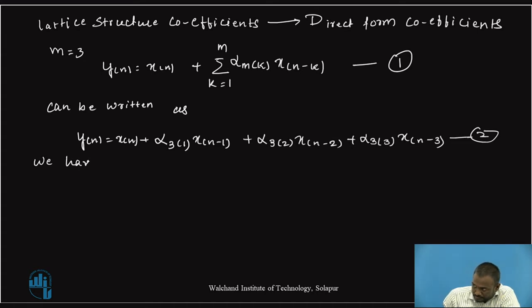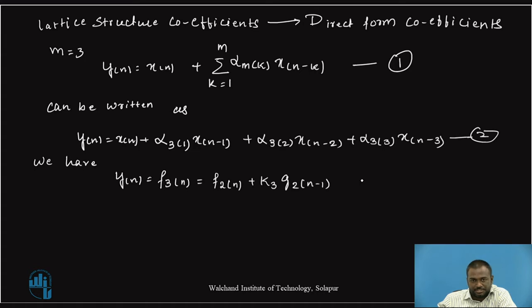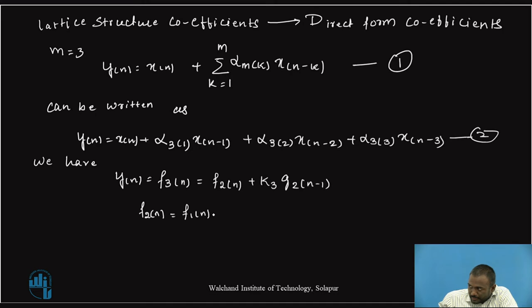Now, we have y(n) equal to f3(n) plus k3 g2(n minus 1). We know that this is the output of the three-stage lattice structure. Here, f3(n) can be found by the values of f2(n) and g2(n minus 1), giving f3(n) equal to f2(n) plus k2 g1(n minus 1).